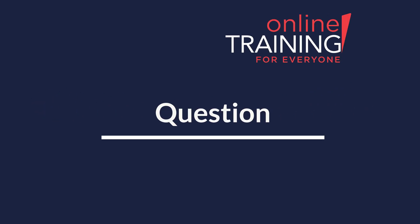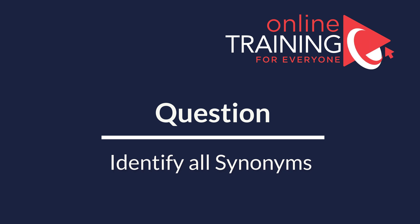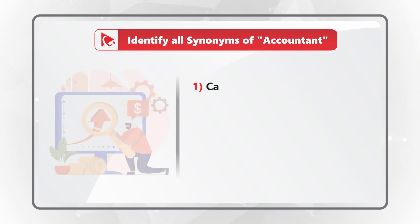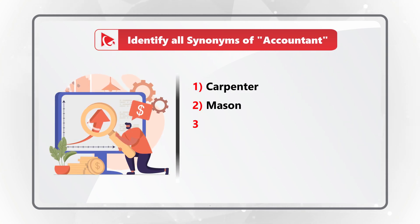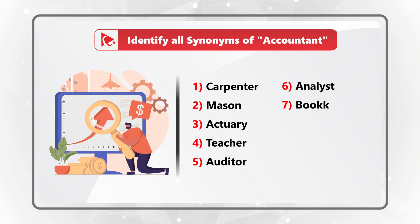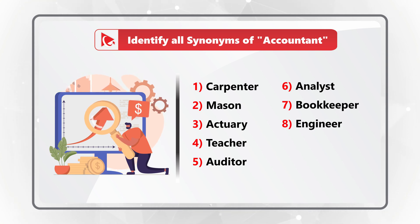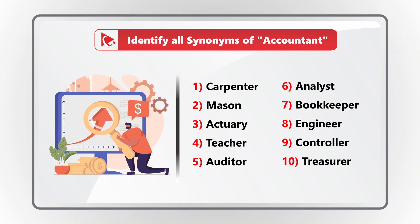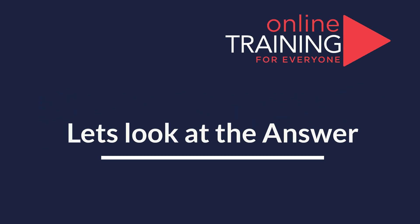If you're trying to improve your English vocabulary, this question might be for you. You need to identify all synonyms to the word 'accountant.' The choices presented are: carpenter, mason, actuary, teacher, auditor, analyst, bookkeeper, engineer, controller, and treasurer. Give yourself a little bit of time — maybe pause this video — because there could be between 1 and 10 answers. I'm going to move forward and share my solution, but if you have a better one, please share in comments.